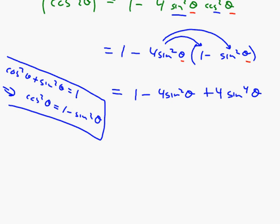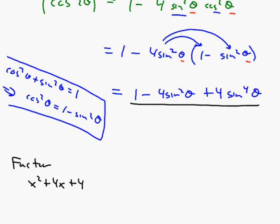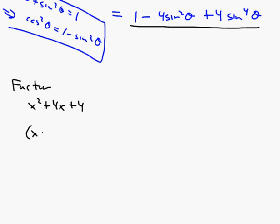Distributing, we get: 1 minus 4 sine squared theta plus 4 sine to the fourth theta. To factor this, consider familiar examples: x squared plus 4x plus 4 factors as x plus 2 squared. And 4x squared plus 4x plus 1 factors as 2x plus 1 squared.